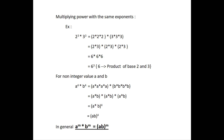Multiplying powers with the same exponents. For example, 2 to the power 3 into 3 to the power 3 equals 6 to the power 3, where 6 is the product of base 2 and 3. For non-zero integers a and b, a to the power 4 into b to the power 4 equals a into b to the power 4, which equals ab to the power 4. In general, a to the power m into b to the power m equals ab to the power m.